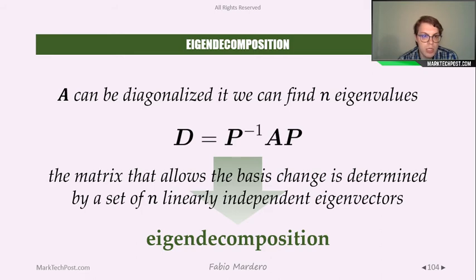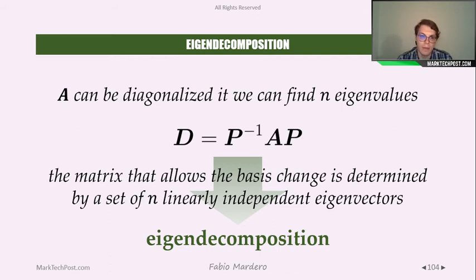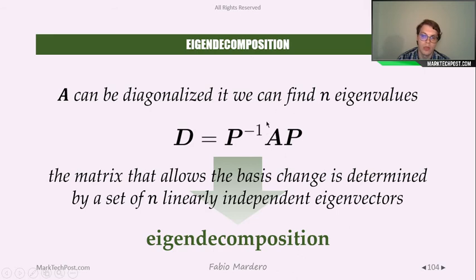Using this technique, A can be diagonalized — and if A can be diagonalized, we are able to find N eigenvalues and express A as a diagonal matrix. This technique, in which from a generic square matrix we obtain N eigenvalues and a diagonal matrix, is called eigen decomposition.